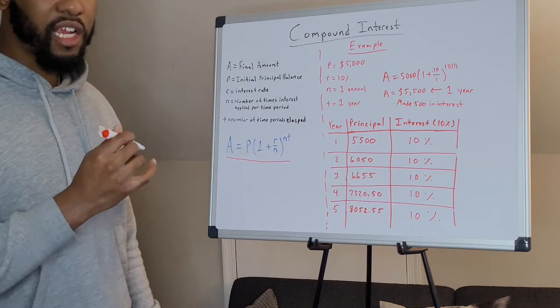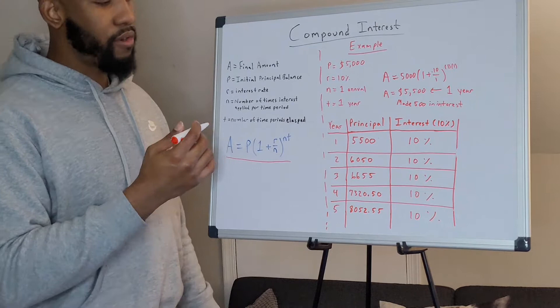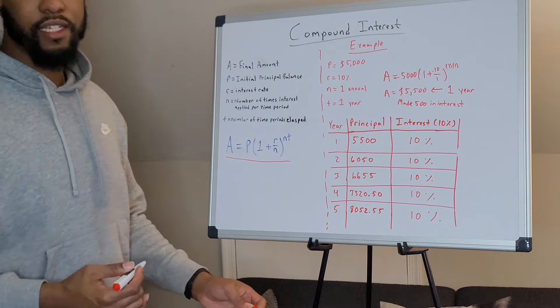That can be semi-annually, it can be annually, it can be monthly, daily. And that will affect how much interest you get. And then you have the number of time periods that elapsed. So are we looking at 1 year, 2 years, 30 days, et cetera.